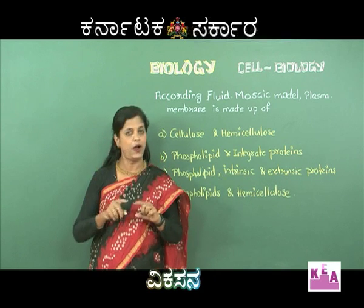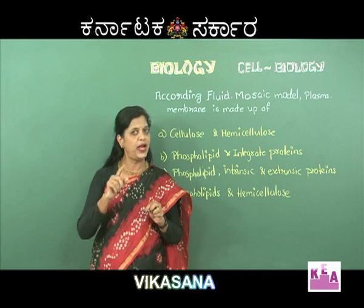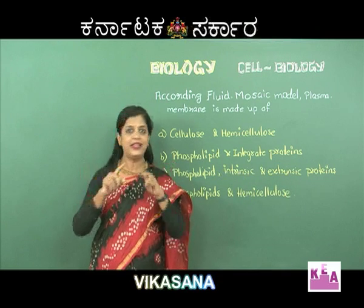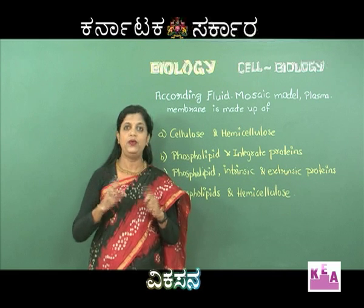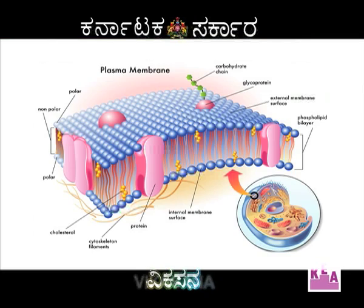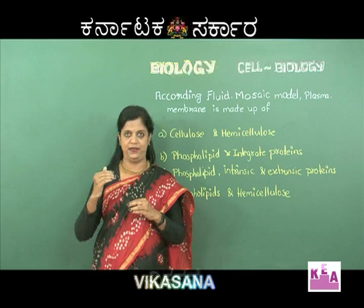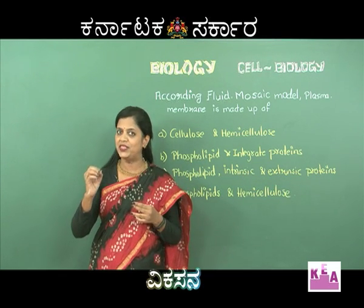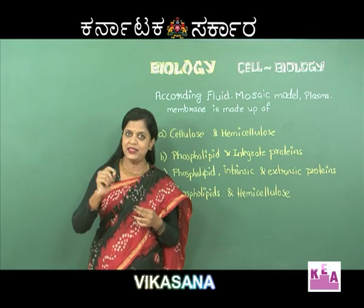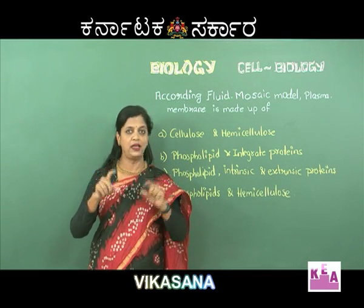Plasma membrane is the outermost layer of animal cells and the second layer of plant cells, because plant cells have one extra layer - the cell wall. But we are talking only about the plasma membrane. It is the inner layer in the plant cell and the outermost layer in the animal cell. There are various models given for the chemical components. You must know that there is a lipid bilayer - the fluid mosaic model.